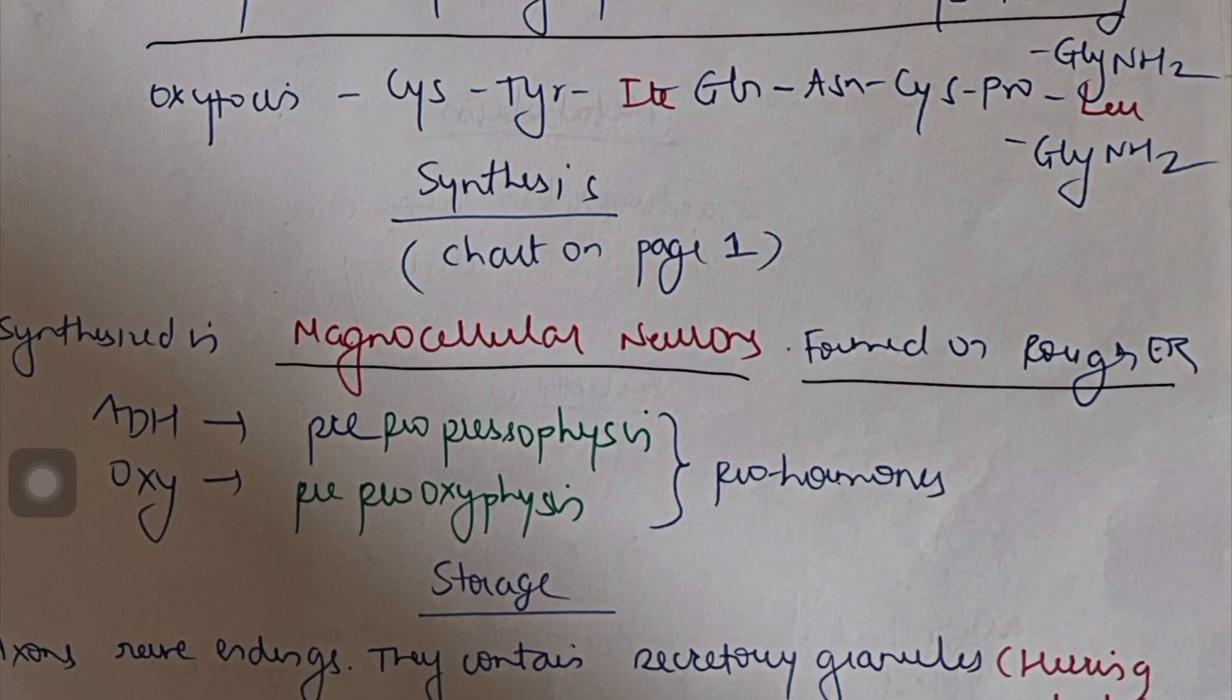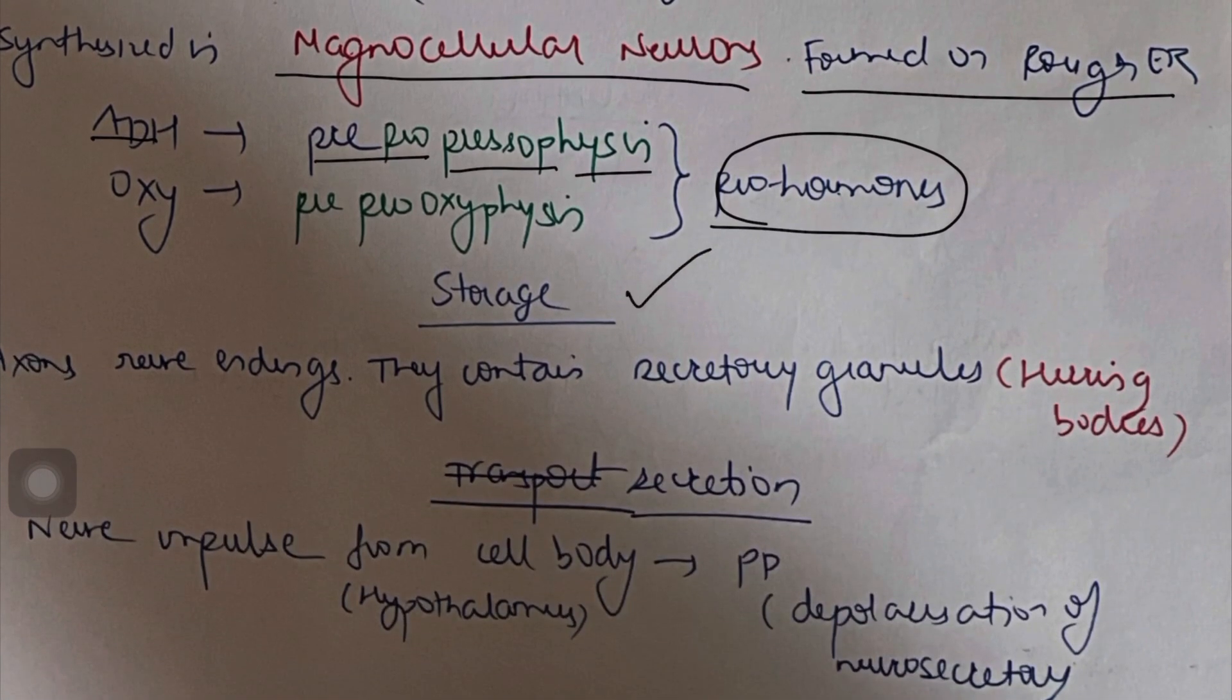They are formed in rough endoplasmic reticulum. So ADH, like any other hormone, also has a pro-hormone. The name of the pro-hormone is pre-pro-presophysin. Now where is this hormone stored? It is stored in the axon's nerve endings. They contain secretory granules which you saw in the diagram called herring bodies.